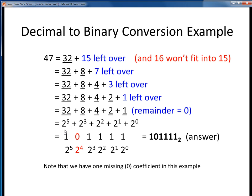So we get 1 for the 2 to the 5th, a missing 2 to the 4th term, a 1 for the 2 to the 3rd, a 1 for the 2 to the 2nd, a 1 for the 2 to the 1, and a 1 for a 2 to the 0, which of course is 1.